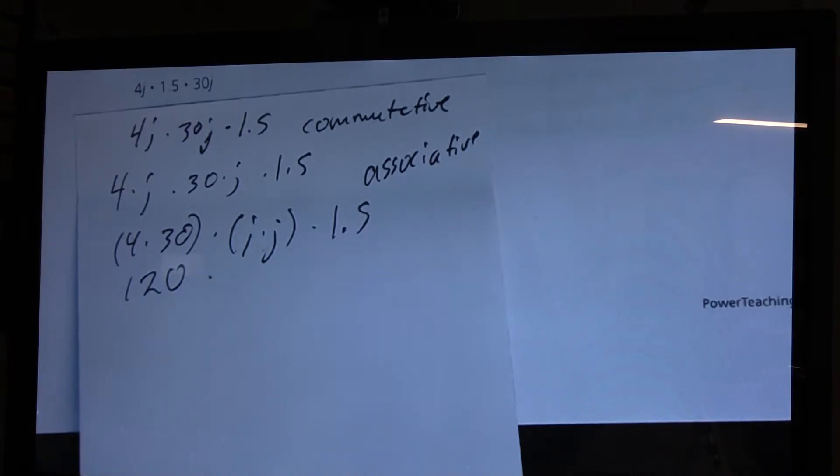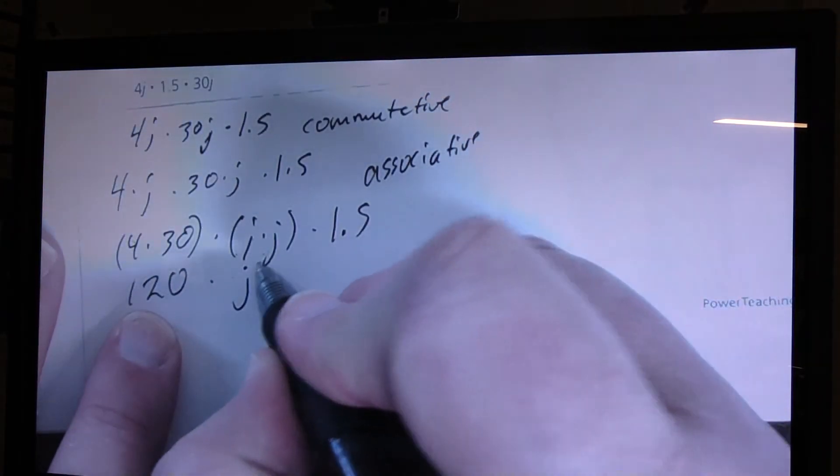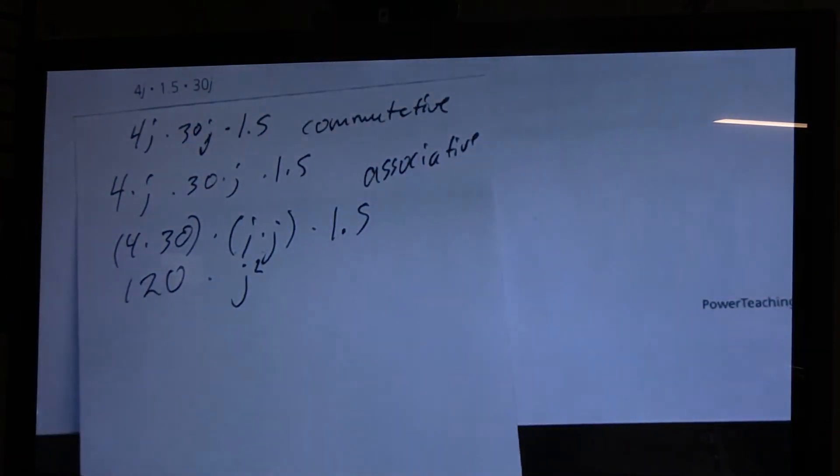We're not worrying about coefficients. We're worrying about what do you get when you have j times itself. As seen here, j, j. j times j. All right, Ethan Day. j squared. j squared. So that's j squared, or j to the second. To the second, not second period, to the second power. To the second power.